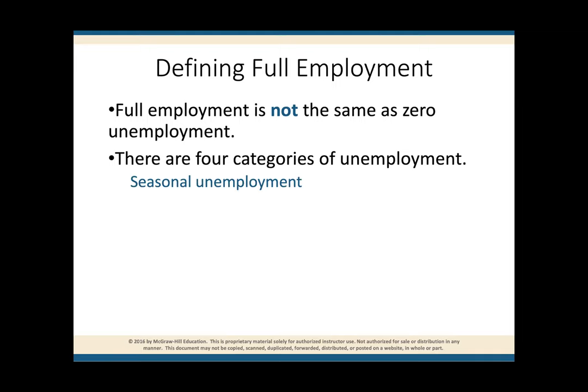We have seasonal unemployment — people who don't work because of the seasons of the year. Carpenters don't have work during winter months, ski instructors don't have a job during summer months. Then we have frictional unemployment — people out of work for short periods of time because they're looking for another job. They have education or skills, and there are jobs available. It's just going to take time for them to find each other.